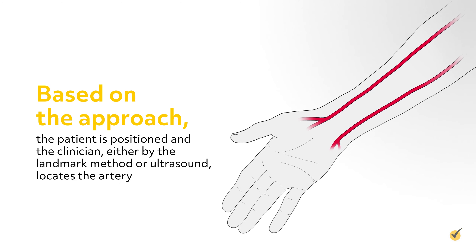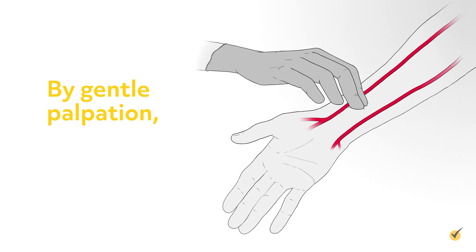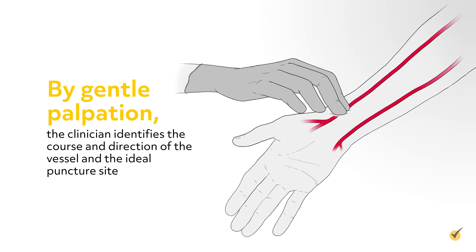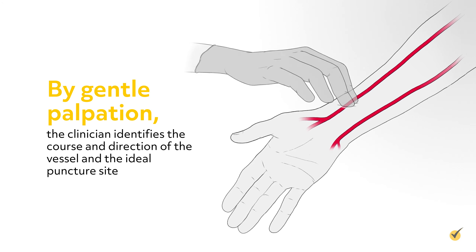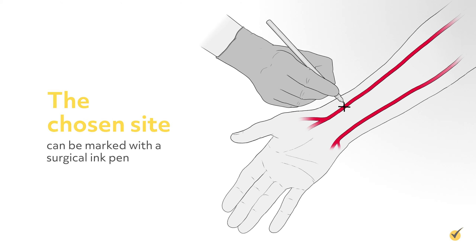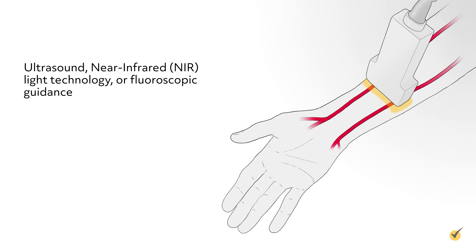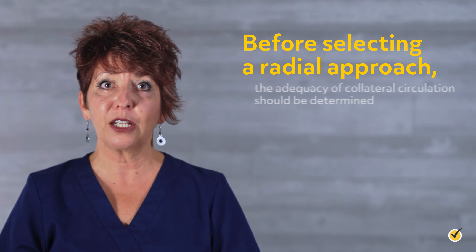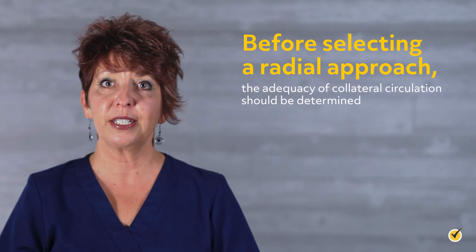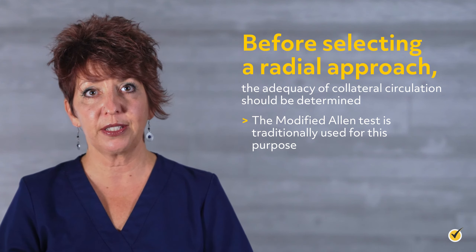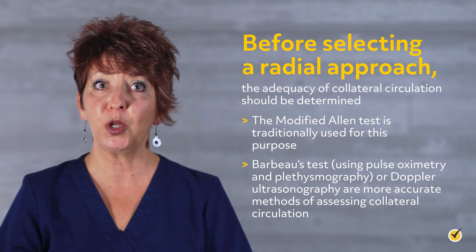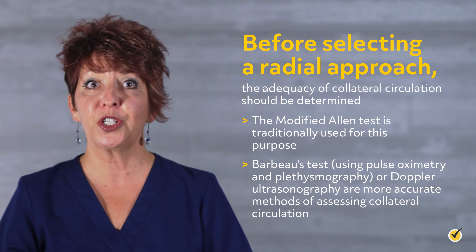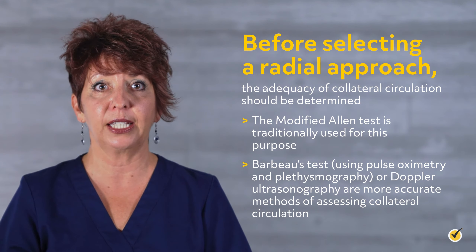Based on the approach, the patient is positioned and the clinician, either by the landmark method or ultrasound, locates the artery. By gentle palpation, the clinician identifies the course and direction of the vessel and the ideal puncture site. The chosen site can be marked with a surgical ink pen, ultrasound, near-infrared light technology, or fluoroscopic guidance to aid vascular visualization and improve puncture site accuracy. Before selecting a radial approach, the adequacy of collateral circulation should be determined. The modified Allen test is traditionally used for this purpose; however, Barbo's test using pulse oximetry and plethysmography, or Doppler ultrasonography, are more accurate methods of assessing collateral circulation.